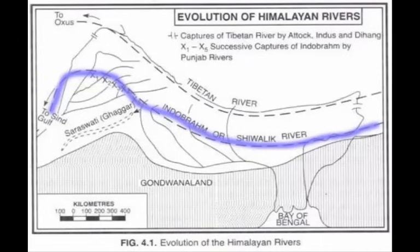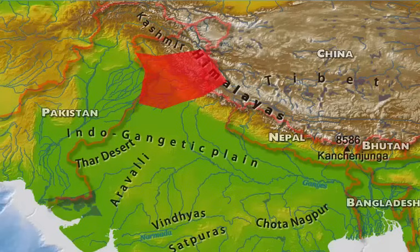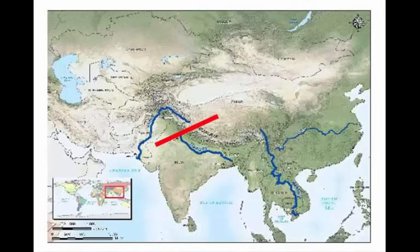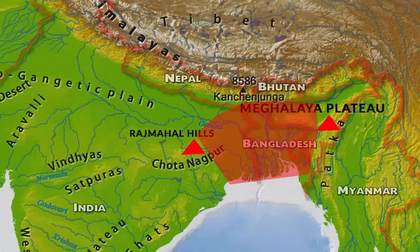The reason behind the breaking of the Indo-Brahma river was the natural uplift of the western Himalayan and Delhi Ridge parts, which caused a division between the Indus and Ganga river systems. On the eastern side, near the Malda Gap — the area between the Rajmahal Hills in Jharkhand and the Meghalaya Plateau — the land was pushed down, diverting the Ganga and Brahmaputra systems to flow towards the Bay of Bengal.